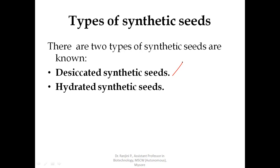Another type of synthetic seed is hydrated synthetic seed, where the somatic embryos are not desiccation tolerant. Such somatic embryos will be encapsulated in a hydrated gel — they are called hydrated synthetic seed. These are produced in those plants that are recalcitrant and very sensitive to desiccation. These hydrated synthetic seeds are produced by encapsulating the somatic embryos in hydrated hydrogel or calcium alginate.